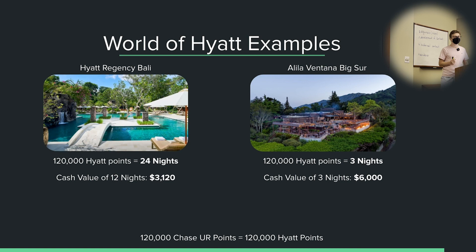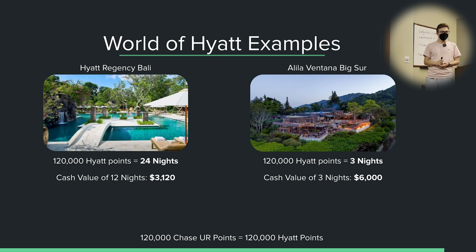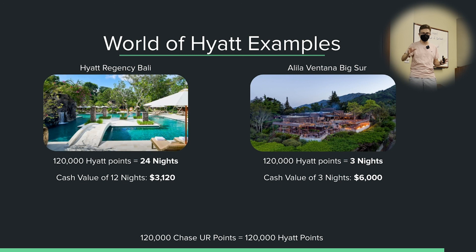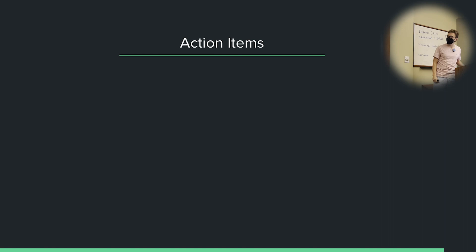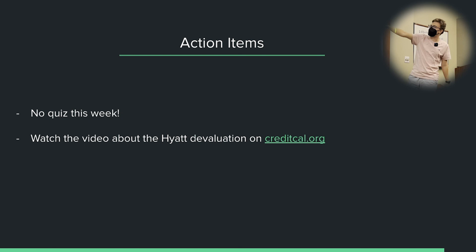If you downgrade the card to a no-annual-fee card, depending on the line of cards in the bank, it should still be pretty much the same. If you downgrade your Sapphire Reserve to a Freedom, the points stay the same, the card still shows up on your credit report as the same age, and you still keep the points — you just can't transfer them out anymore. So we're pretty much at time. There's no quiz this week, but I'd appreciate it if you watch the video I made on the Hyatt evaluation on the website, because if you just hoard points they'll keep going down in value. Please fill out the attendance form and feedback form.